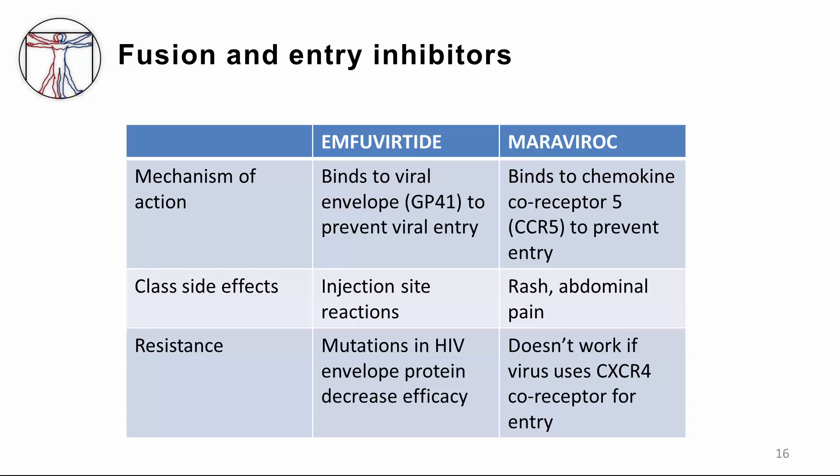The next drug is Maraviroc, which is a CCR5 antagonist. It works by binding to the chemokine co-receptor CCR5, and entry is prevented in that way. Side effects include rash and abdominal pain. The drug is not effective if the virus uses the co-receptor CXCR4 instead of CCR5 to enter the cell. CXCR4-tropic virus is typically found late in HIV infection. However, we must check the tropism status before using the drug, even in recently infected patients.